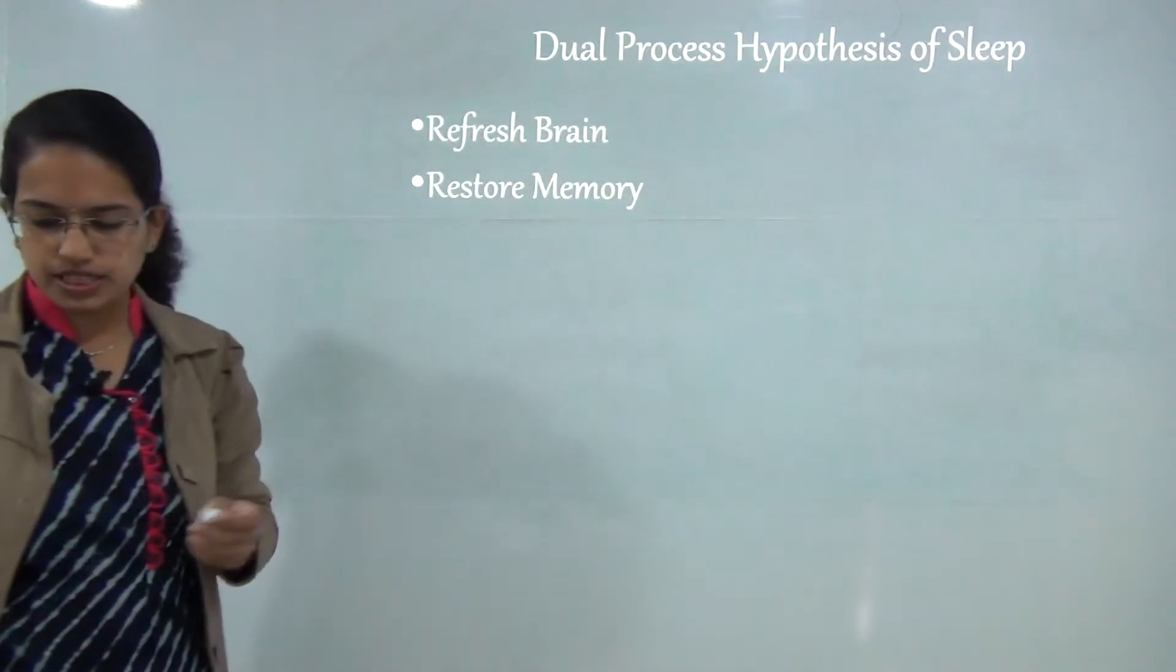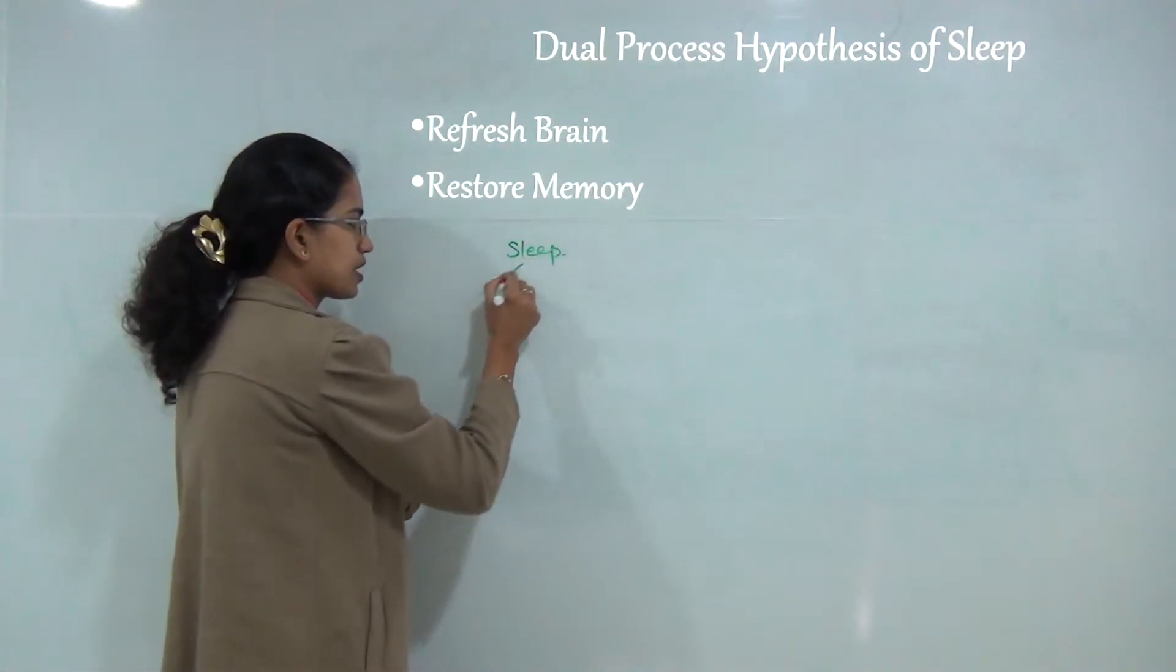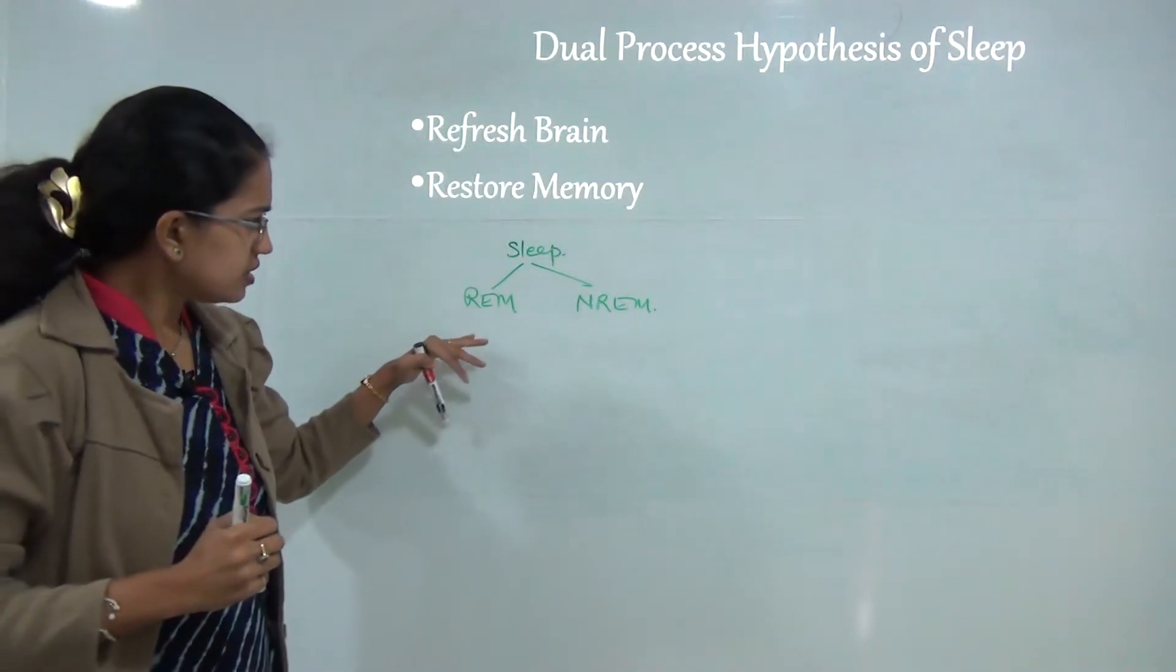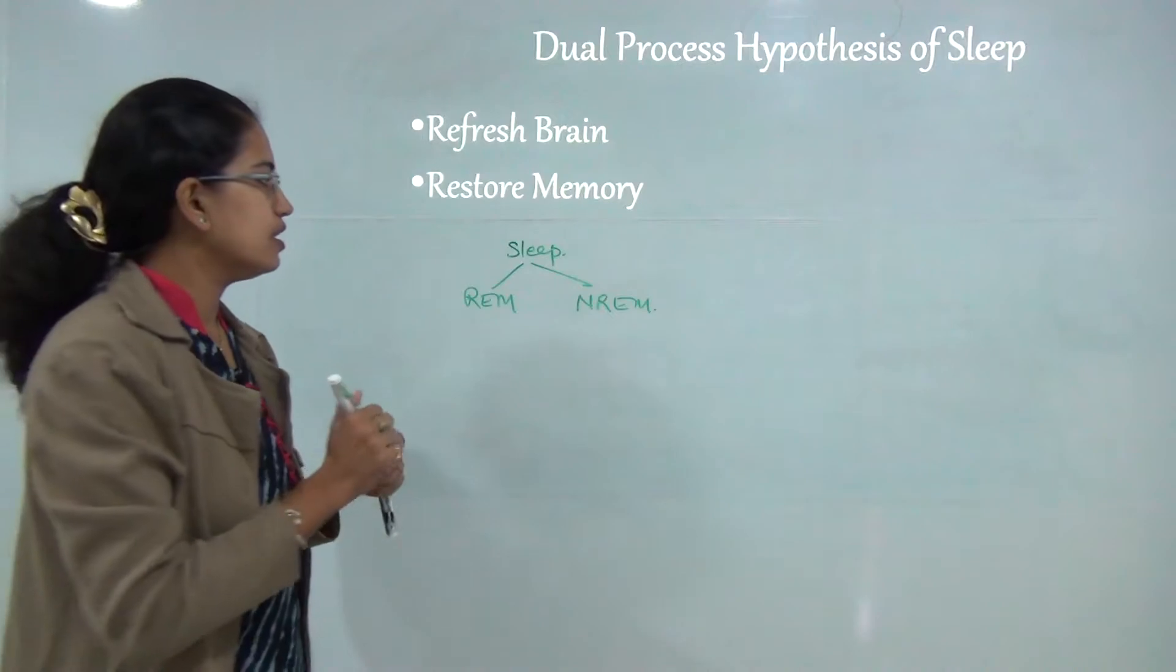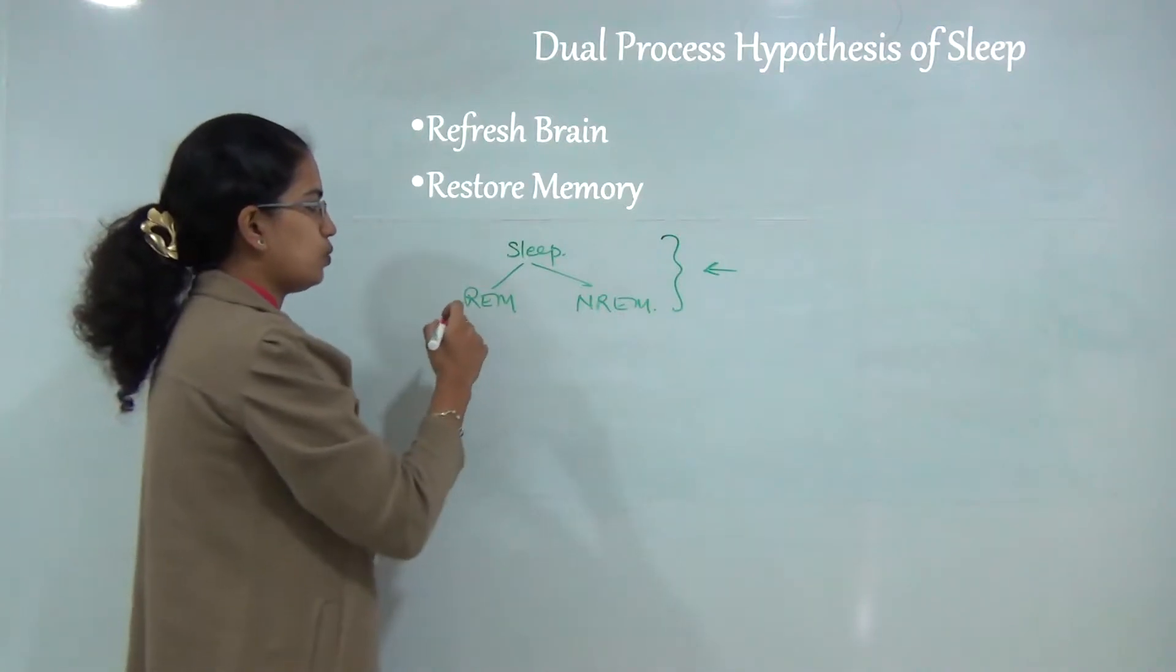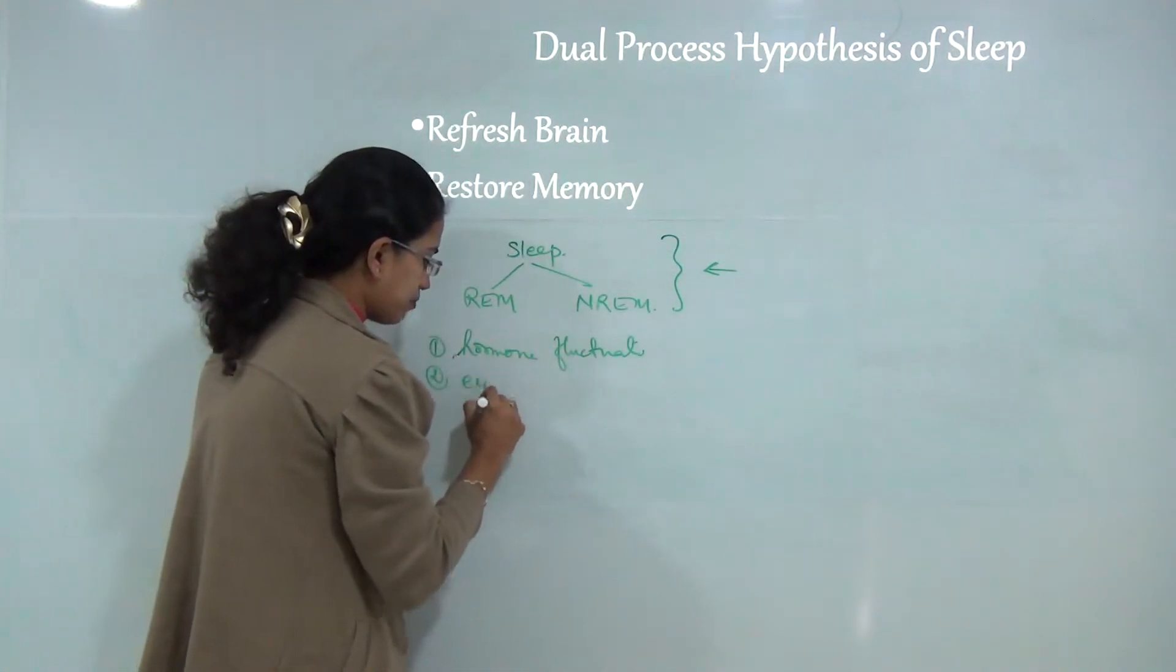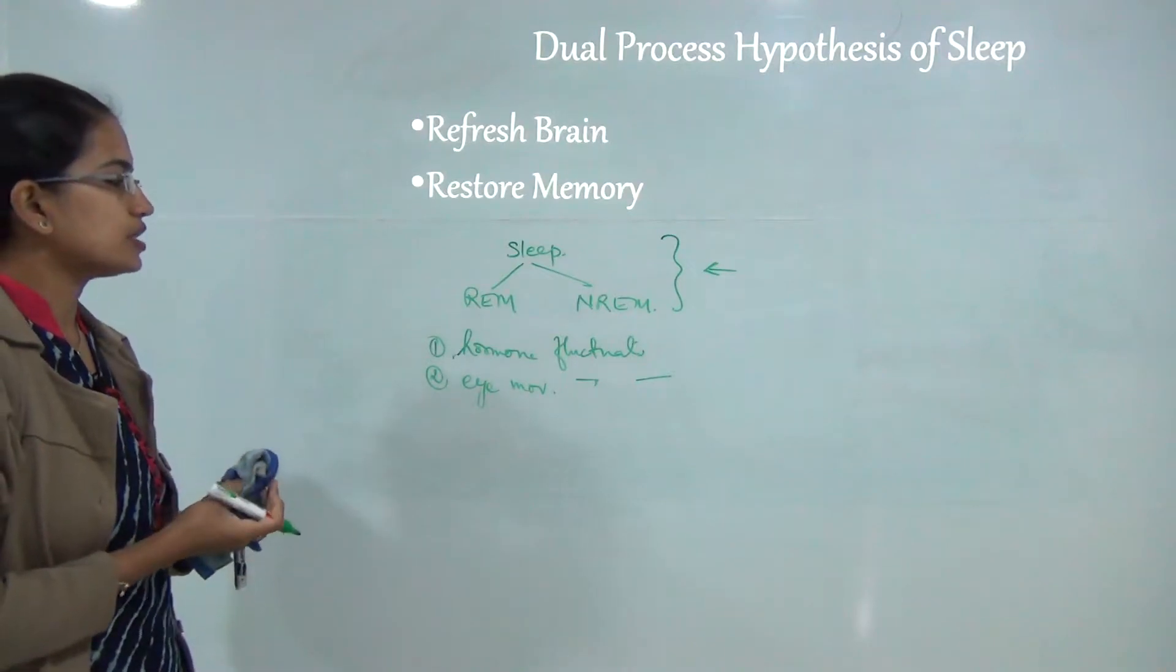One is the REM sleep and the other is the non-REM sleep that we have already talked about in the previous class. You have the REM sleep, that's the rapid eye movement, and the NREM sleep, that is the non-rapid eye movement. Sleep hormone fluctuates in level, and this level is determined in the body by various means. Eye movement fluctuates, and there are other fluctuations as well that affect the process of sleep.